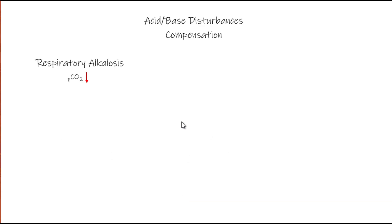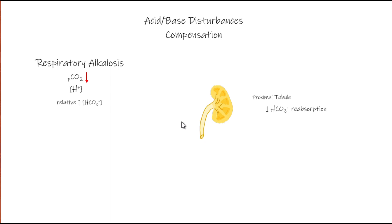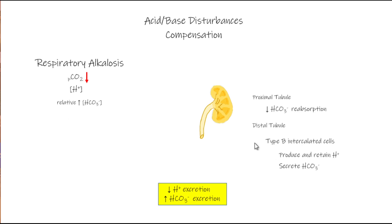With a respiratory alkalosis, the primary problem is a decrease in CO2 or hydrogen ions, or a relative excess of bicarbonate. Again, only our kidneys are going to be able to help out here. In the proximal tubule, because we have an excess of bicarb, we're going to see simply a decreased reabsorption of bicarb — we're going to allow that to pass on through. In the distal tubule, our type B cells are going to be at work; they're going to help us produce and retain hydrogen ions and secrete bicarbonate. These actions directly oppose the primary problem we see with a respiratory alkalosis.